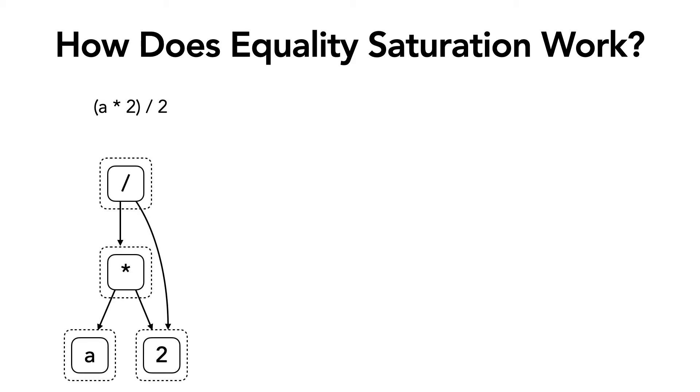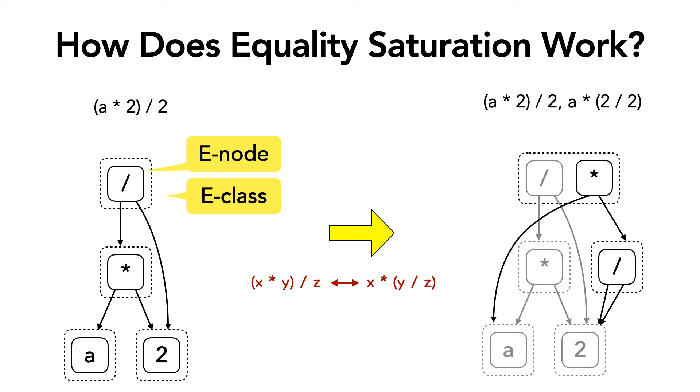So going back to our example, let's look at an e-graph. So here we have the initial e-graph, which is actually just the AST of the input term. But note that the nodes here are inside their own equivalence classes, or e-classes, and the edges point from an e-node to an e-class of children. Then when we apply a rewrite rule, the e-graph is populated with the new equivalent terms. In this case, the e-class containing the div term now also has the new term obtained by applying the rule.